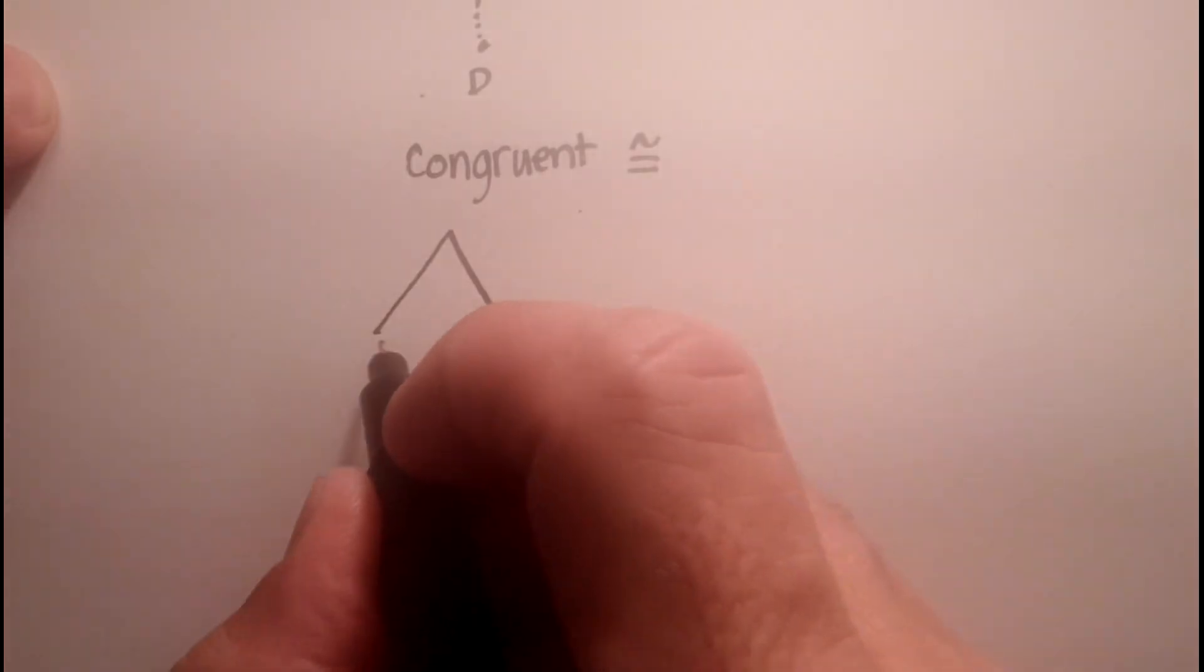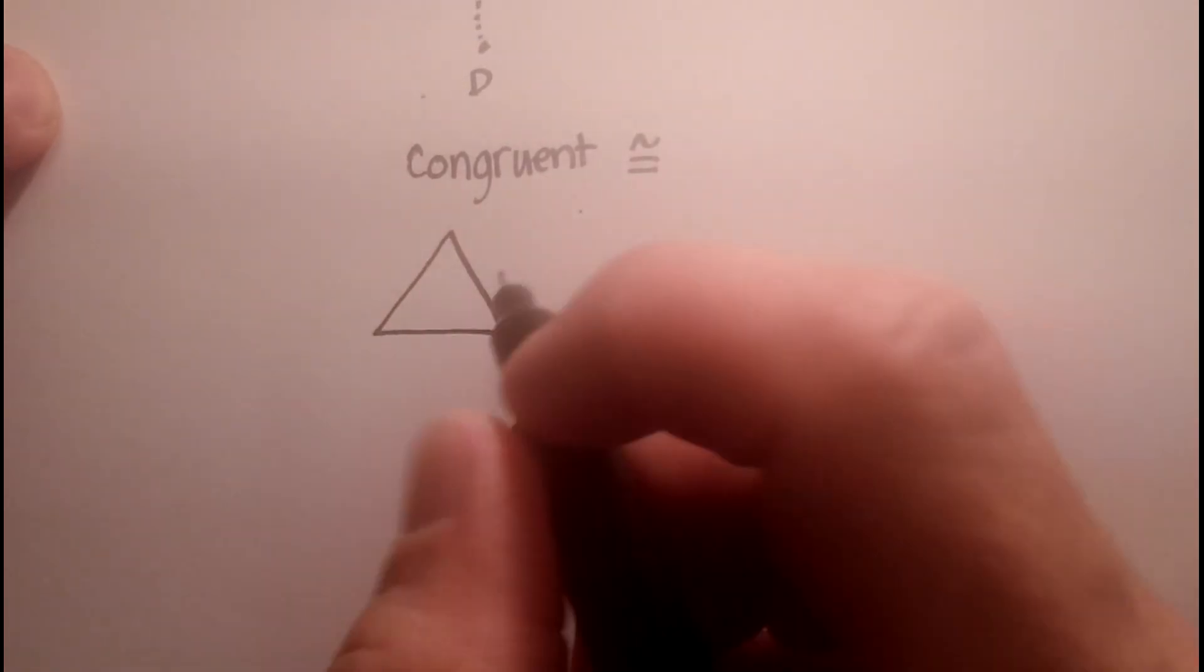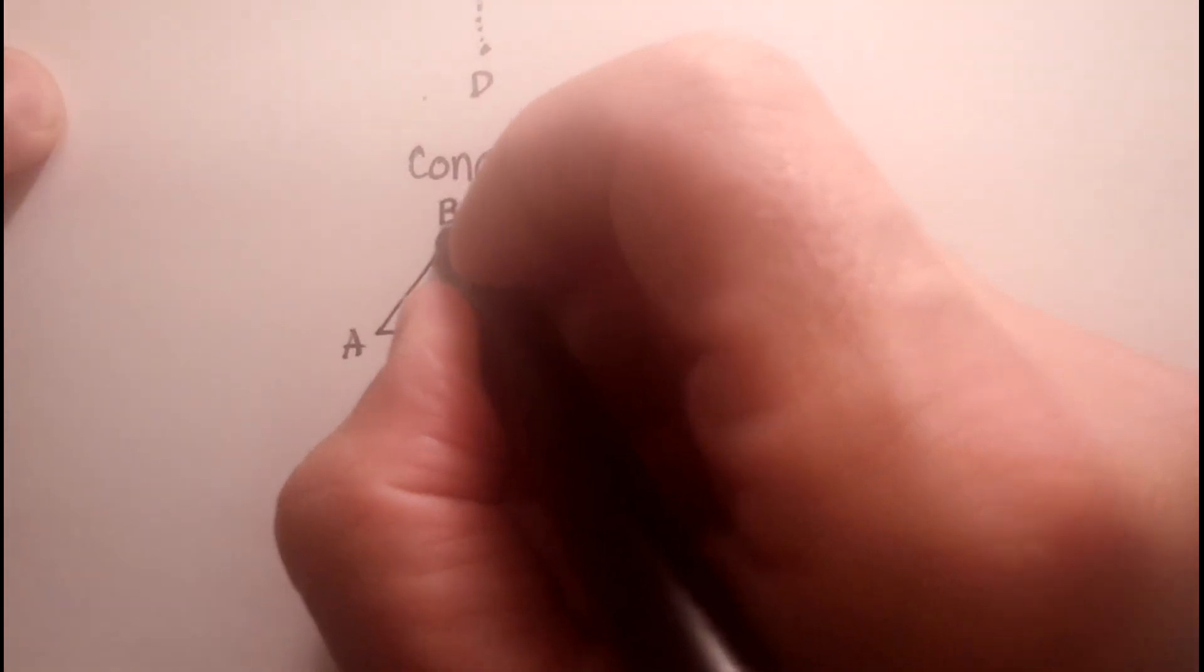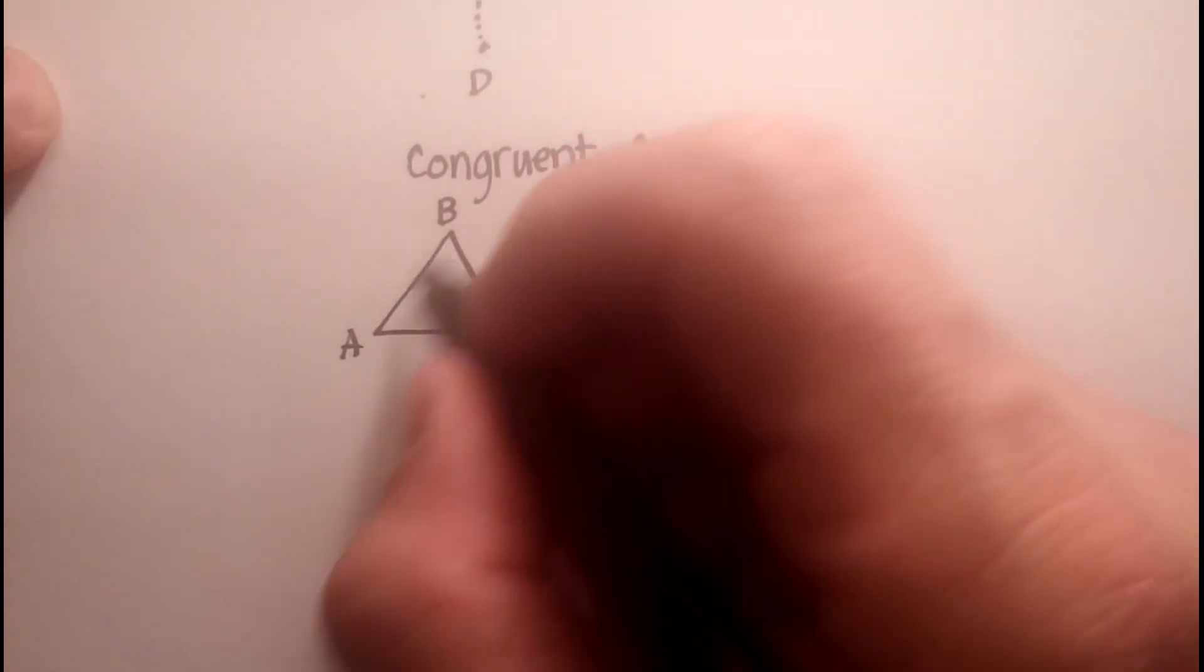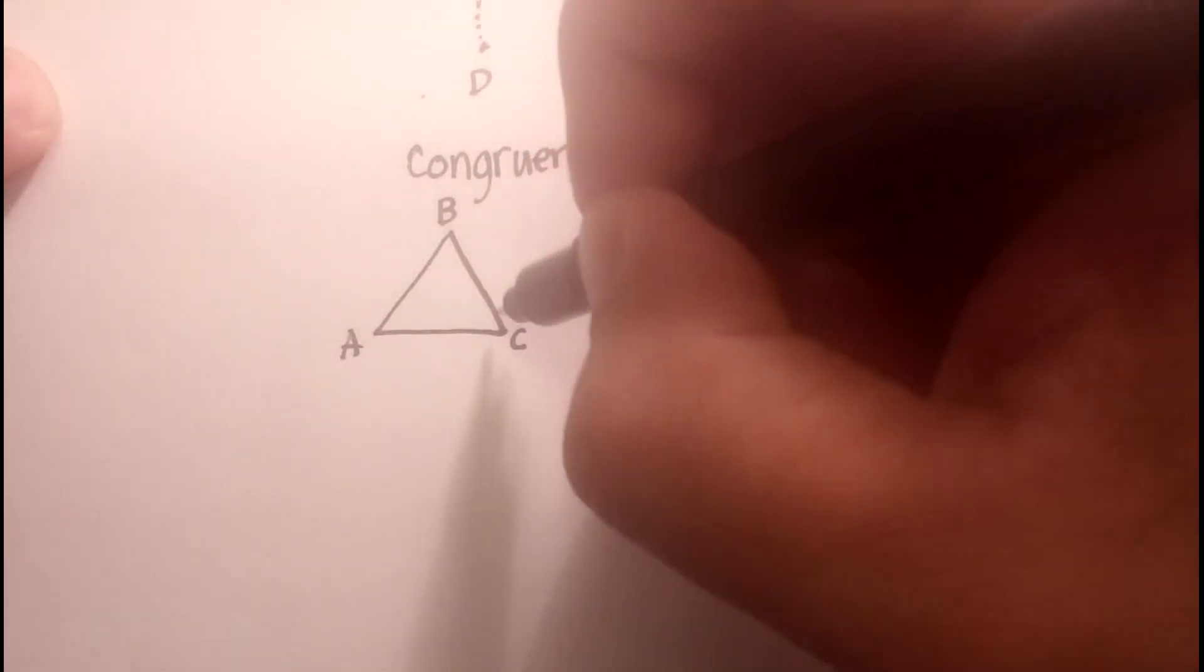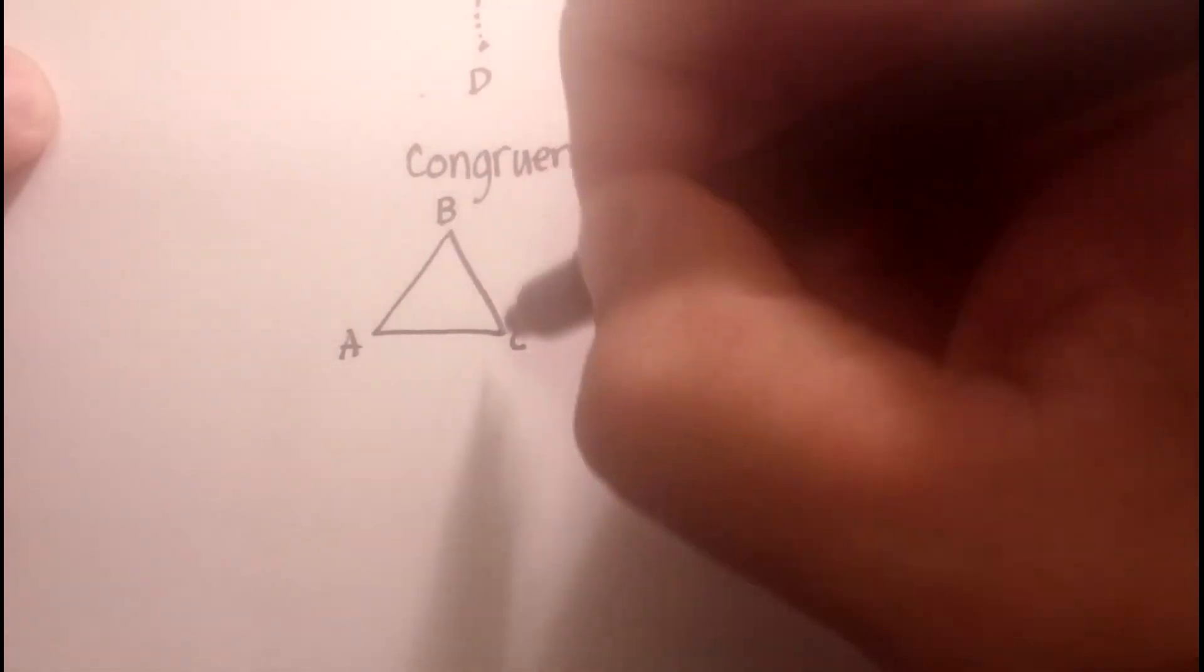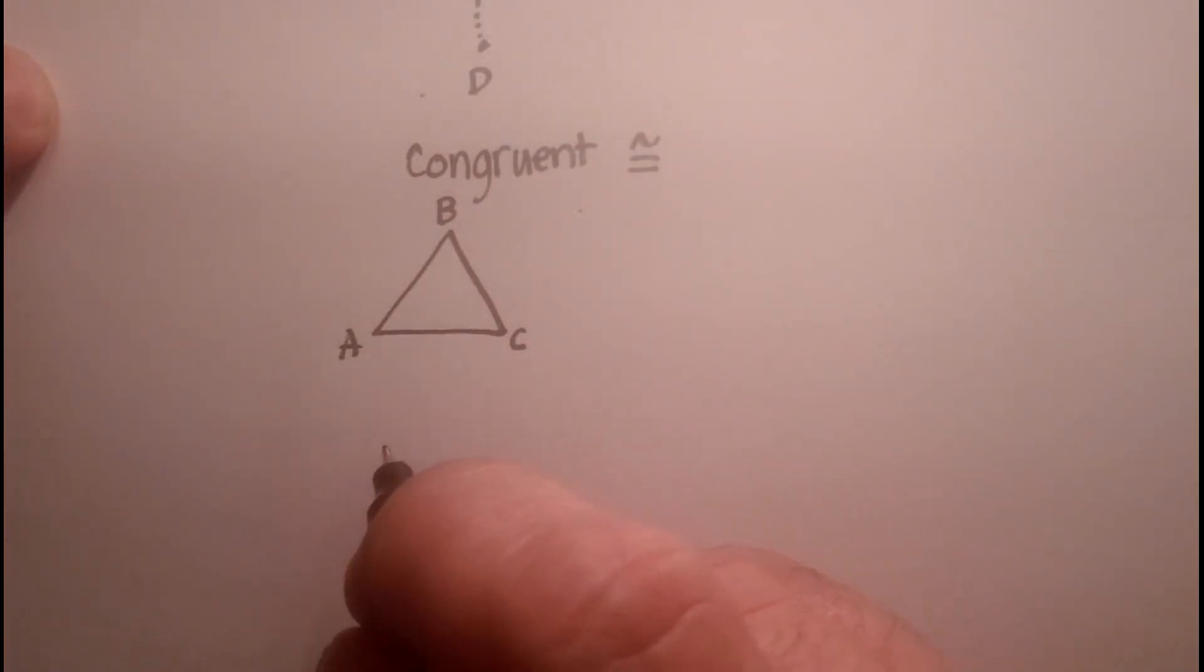Now what does congruent mean? If I were to draw out like a triangle with two sides equal, it kind of looks like all three, but let's say this is triangle A, B, C. And let's say that this line segment and this line segment are exactly the same length. And let's say this one's just a little longer.